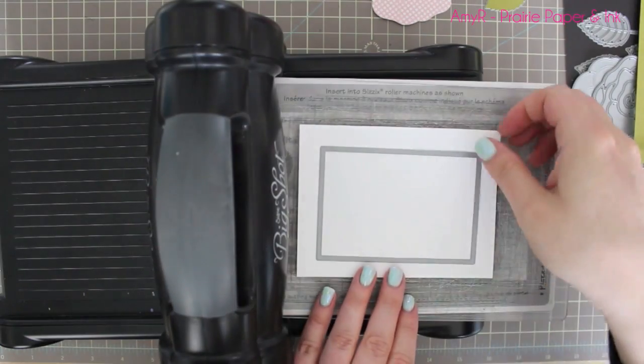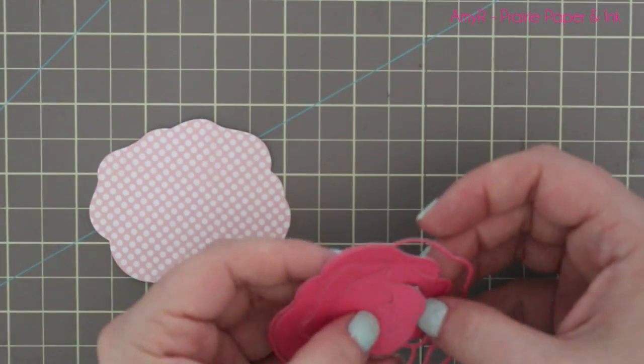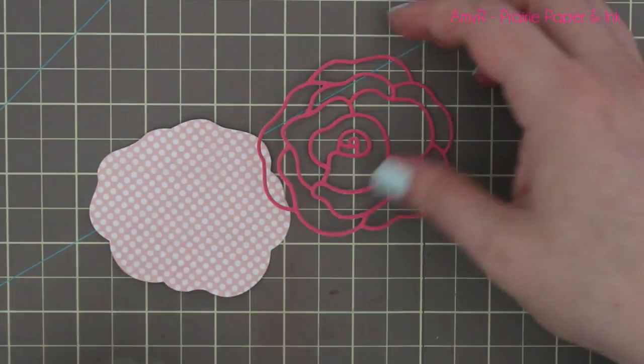Once I was done with that, I'm going to go ahead and adhere the two pieces of the rose together. Popped out all the negative space there and got that out of the way.